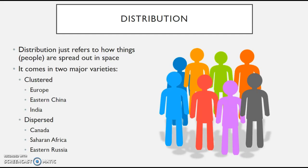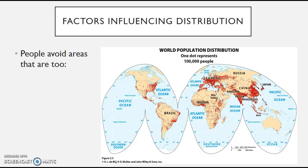You'll also notice areas with very dispersed populations. Most of Canada, for example, is very dispersed — much of the Canadian population lives within about 25 to 50 miles of the American border, with the rest very spread out. Saharan Africa is much the same way; the few people who live there tend to migrate and move around a lot, engaging in cyclic movement. And eastern Russia — the Siberia area — also has very few people living there.